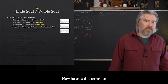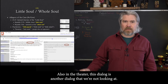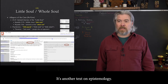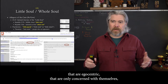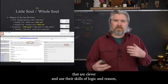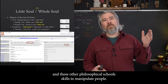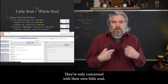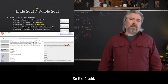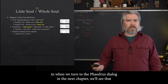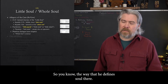He also uses 'psykarion' in the Theaetetus dialogue — another text on epistemology — and there he uses it the same way as in the Allegory of the Cave: to describe people who are egocentric, only concerned with themselves, who are clever and use their skills of logic and reason to manipulate people. They're only concerned with their own little soul, not with those around them, not with the whole soul. When we turn to the Phaedrus dialogue in the next chapter, we'll see that the whole soul — the holos psyche — is eternal.